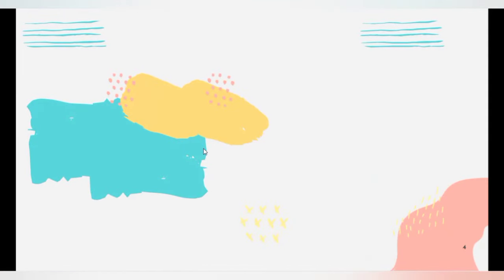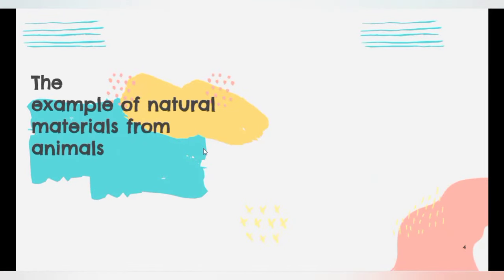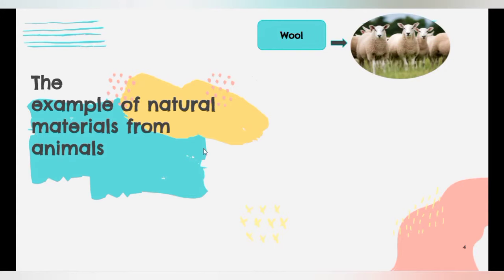Let's take a look at the example of natural materials from animals. First, wool. We can get wool from sheep. It can be used to make woolen sweater.